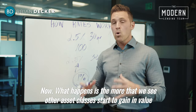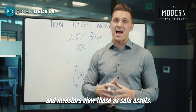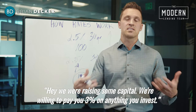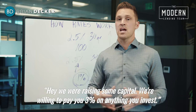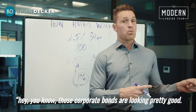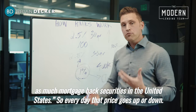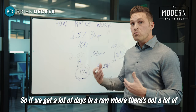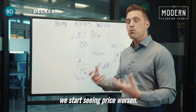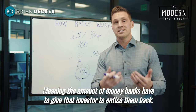The more we see other asset classes gain in value and investors view those as safe assets — for example, a big company in America says 'we're raising capital and we'll pay you 3%' — those investors buying mortgage loans say, 'those corporate bonds are looking pretty good, I'm not going to buy as many mortgage-backed securities.' So every day that price goes up or down. If there are many consecutive days without many buyers of those mortgage-backed securities, we start seeing the price worsen — meaning the amount of money banks have to give investors to entice them back increases.